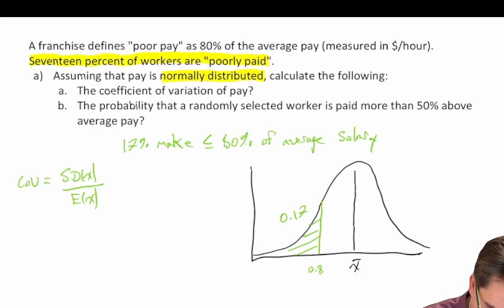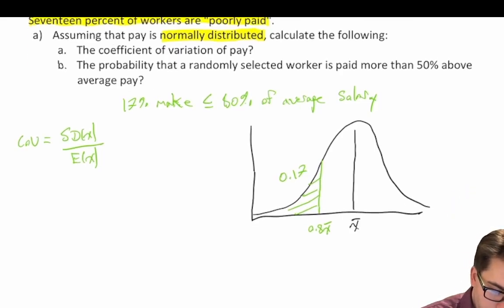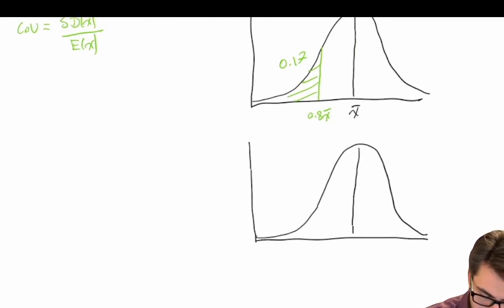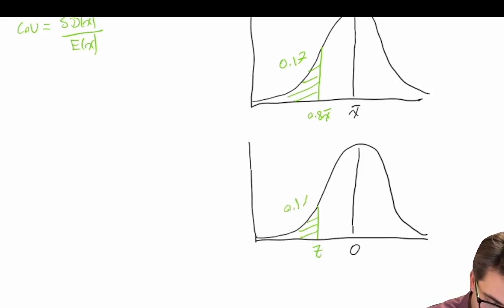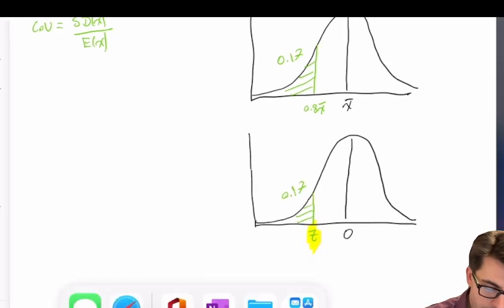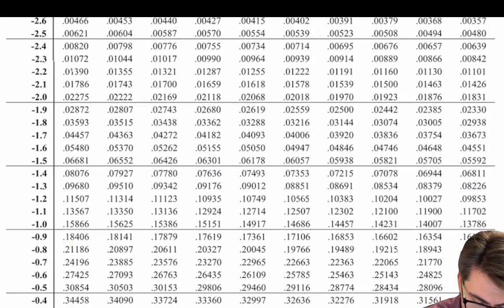This corresponds to 0.8 x-bar, or 80 percent of the average pay. We can also draw this as a standard normal curve, centered around a z-score of zero. We don't know what this value of z is, but we do know that the area to the left of this value is equal to 0.17. So let's look up the corresponding z-value in our z-table — we're looking for 0.17.